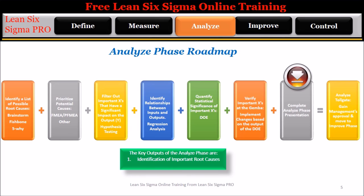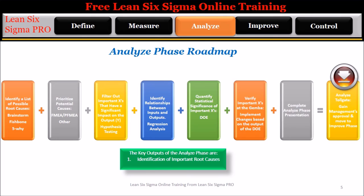Step 7: Complete the analyze phase presentation. Step 8: Analyze tollgate — gain management's approval and move to the improve phase. Note: the analyze phase tends to be the most difficult for students with little to no knowledge of statistics. We will spend a considerable amount of time during the analyze phase modules learning these important tools. The key output of the analyze phase is: 1. Identification of important root causes.